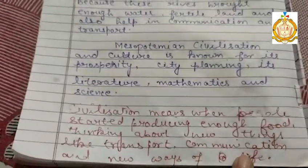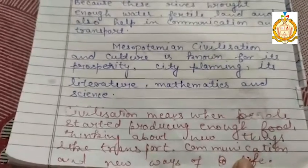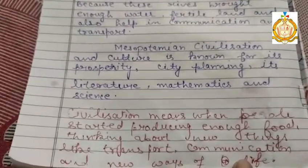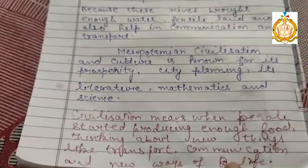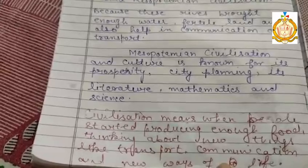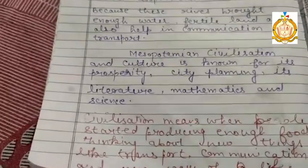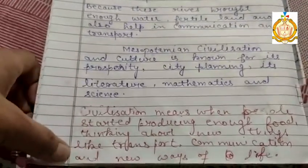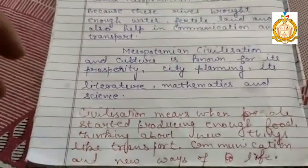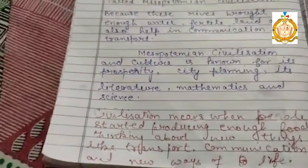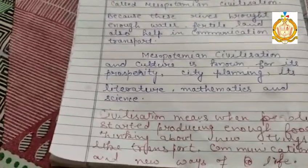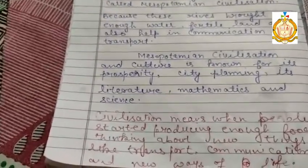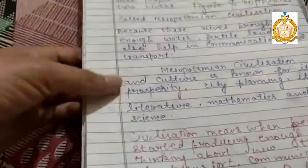of life — that is called a civilization. In other words, we can say that civilization means the advanced stage of human development, when men started taking part in creative activities and other activities.